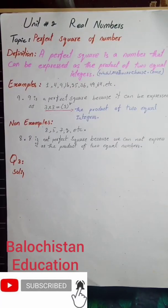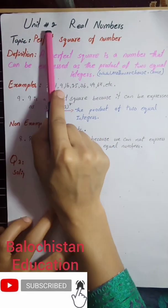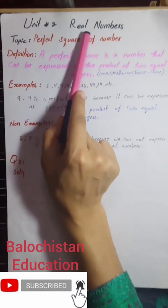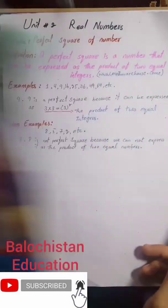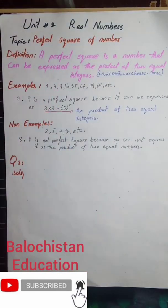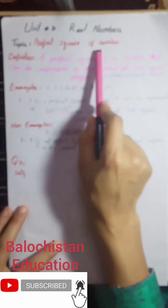Assalamu alaikum everyone. I hope you all are enjoying your life and having fun with mathematics. As you all know, we are in unit number two, which is known as Real Numbers. The topic we have today, which we are going to discuss, is the perfect square of a number.